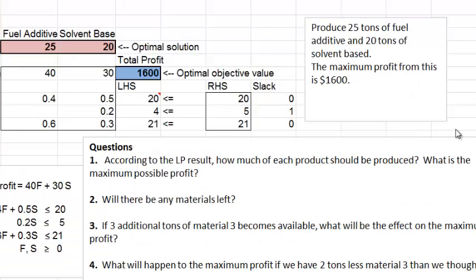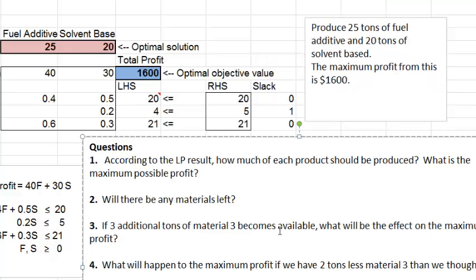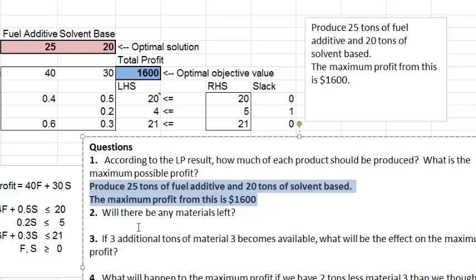The first question is just a summary question. According to the result, how much of each product should be produced? What is the maximum possible profit? Well, we have answered this question already here, so I'm just going to copy this and put it here and let's make it bold.